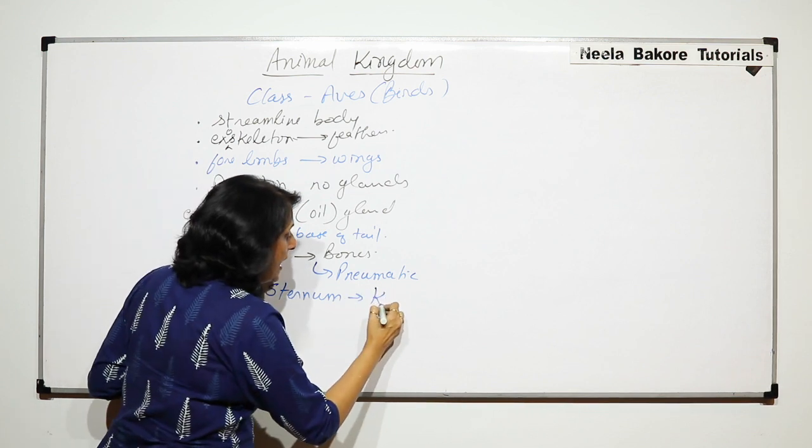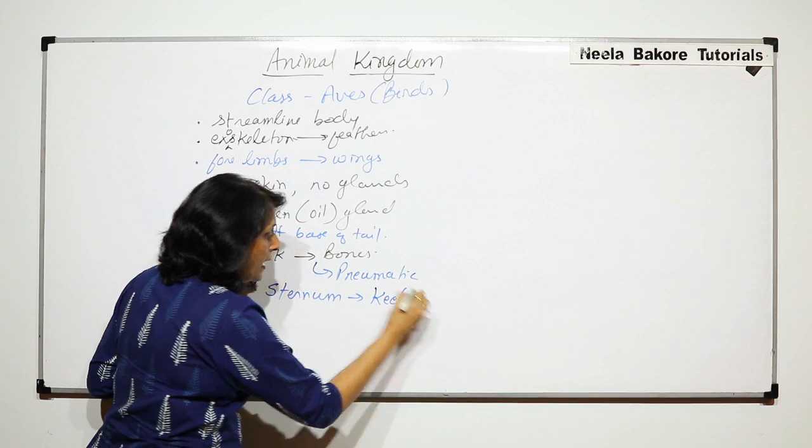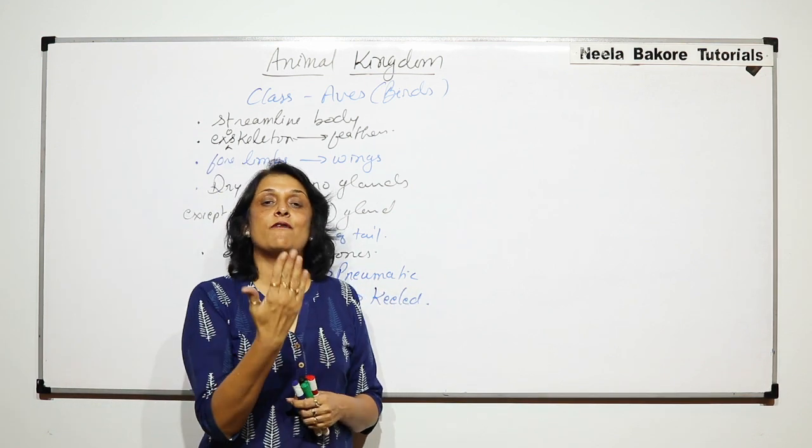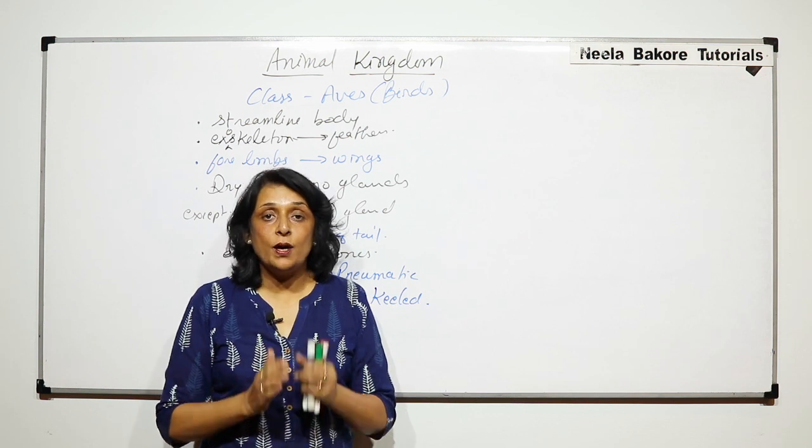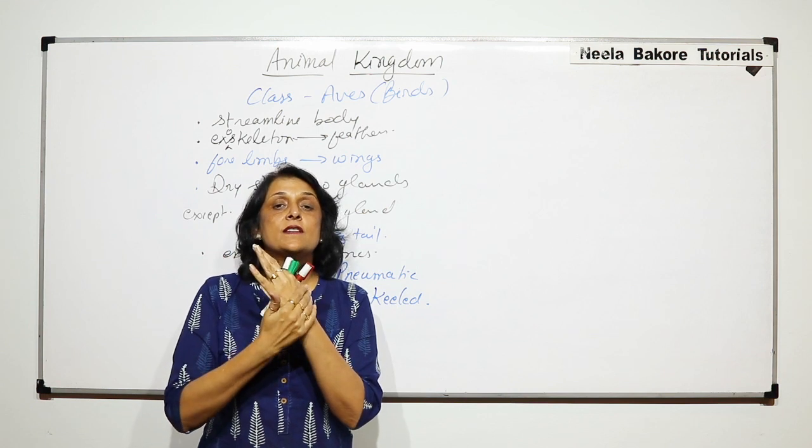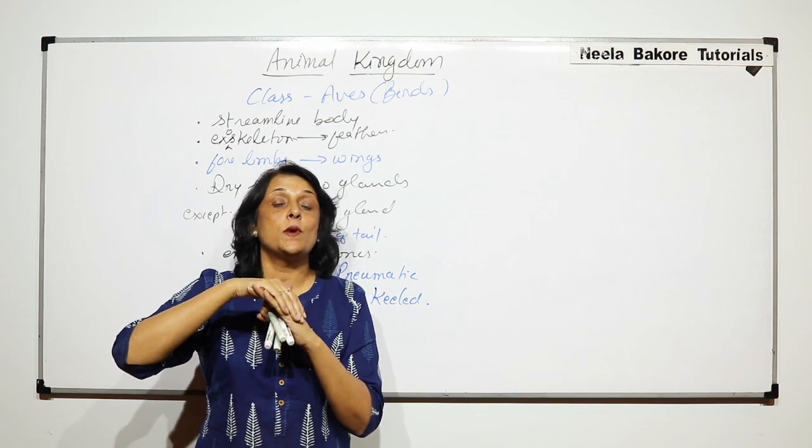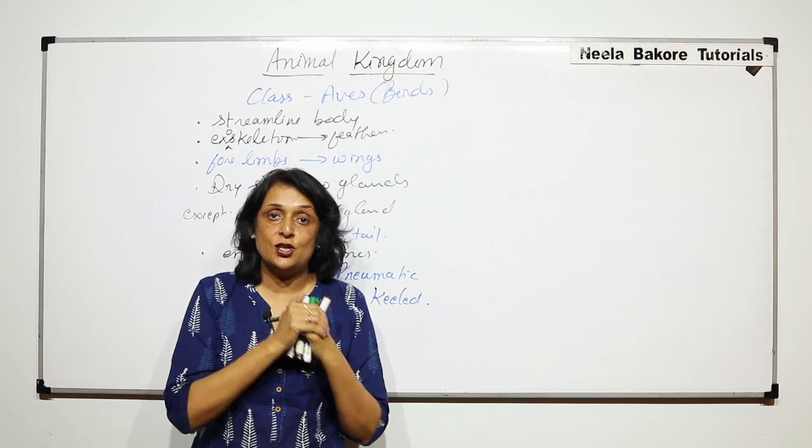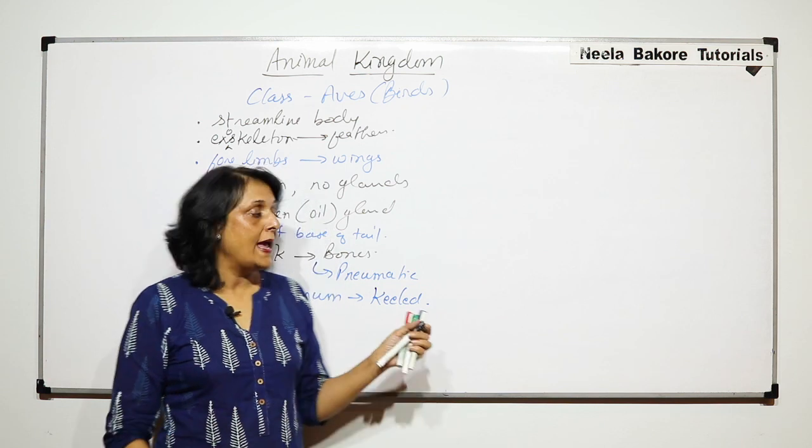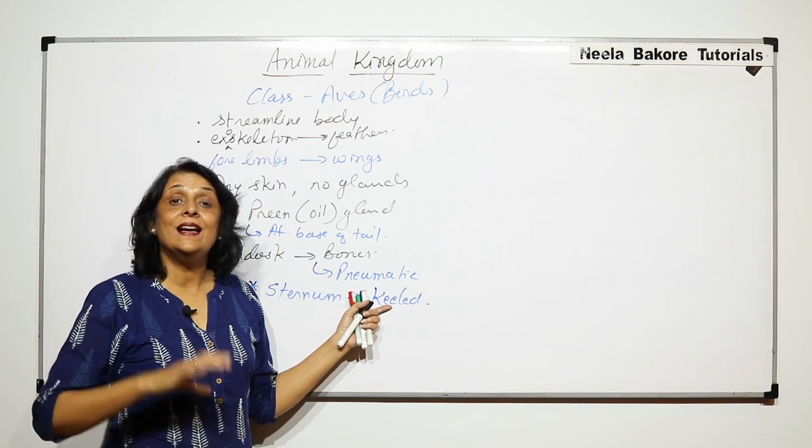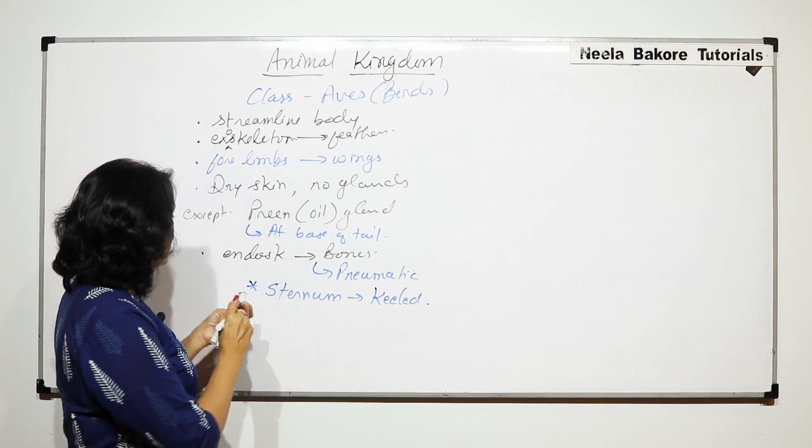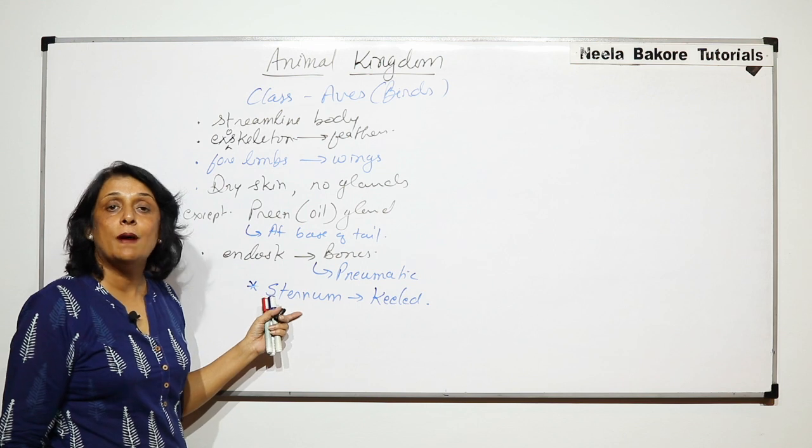In endoskeleton we also talk of sternum which is known as the breast bone, it is keeled. Normal case in humans the breast bone or sternum is a flat bone, but in case of birds it becomes V shaped. So this flat area which is there is known as keel. This is the surface where the flight muscles get attached. So the keeled sternum is a characteristic feature of birds and this keeled area provides attachment for the flight muscles.